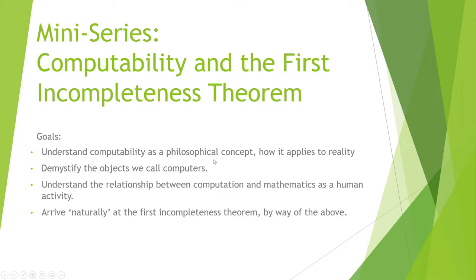So here are the goals. The goals are to understand computability as a philosophical concept and how it applies to reality, to demystify the objects that we call computers, to understand the relationship between computation and mathematics as a human activity, and to arrive naturally, naturally in massive heavy lifting quotes, naturally at the first incompleteness theorem by way of the above. What I mean by naturally is I'm kind of speaking for myself. My journey to the first incompleteness theorem really was just I kind of fell into it via what I was looking at. I kind of just arrived at it myself. I didn't really learn it from any particular book.